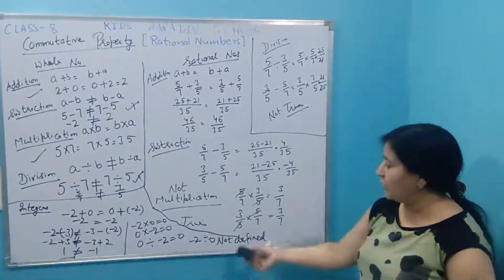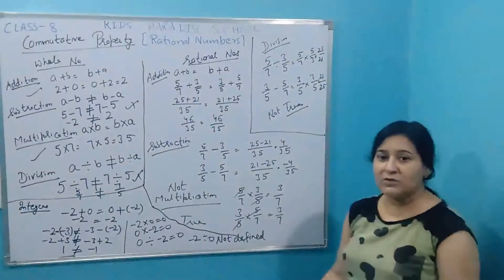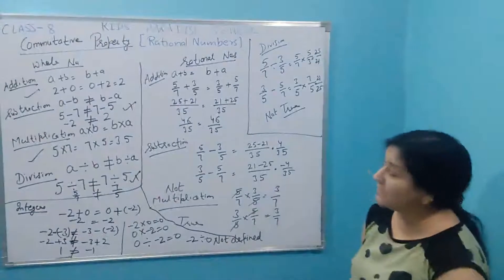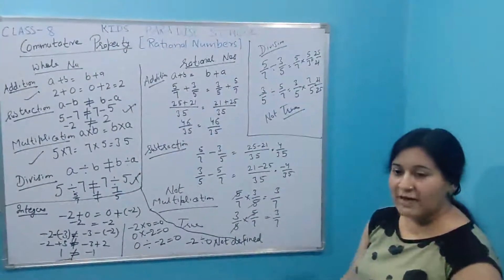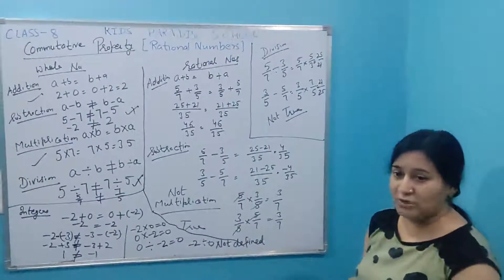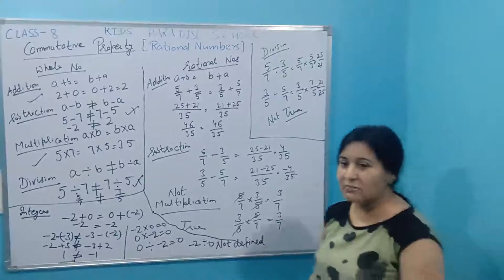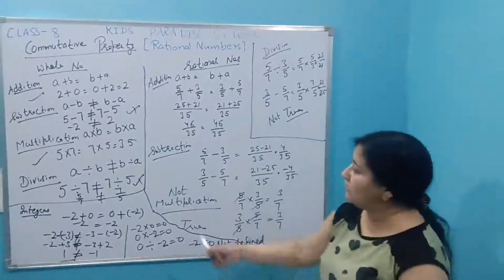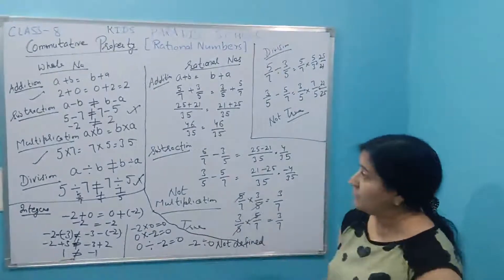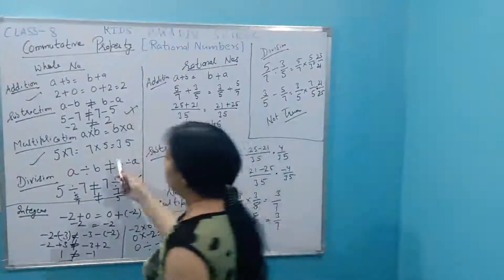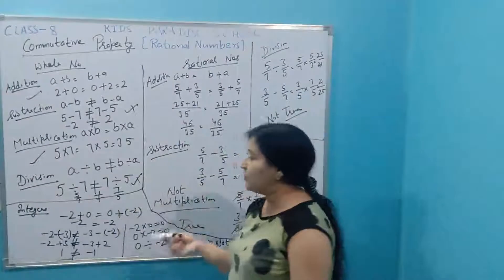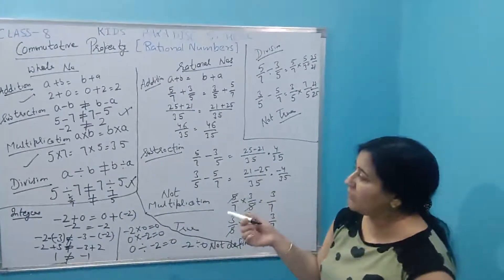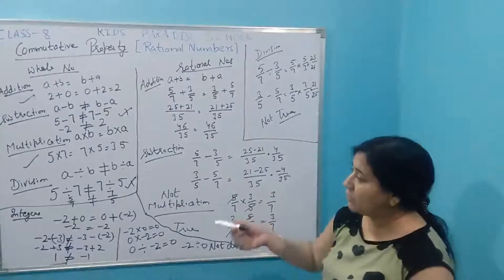You can also try another example: minus two divided by minus three versus minus three divided by minus two. These give two by three and three by two respectively, which are different. So commutative property under division is not true for integers.